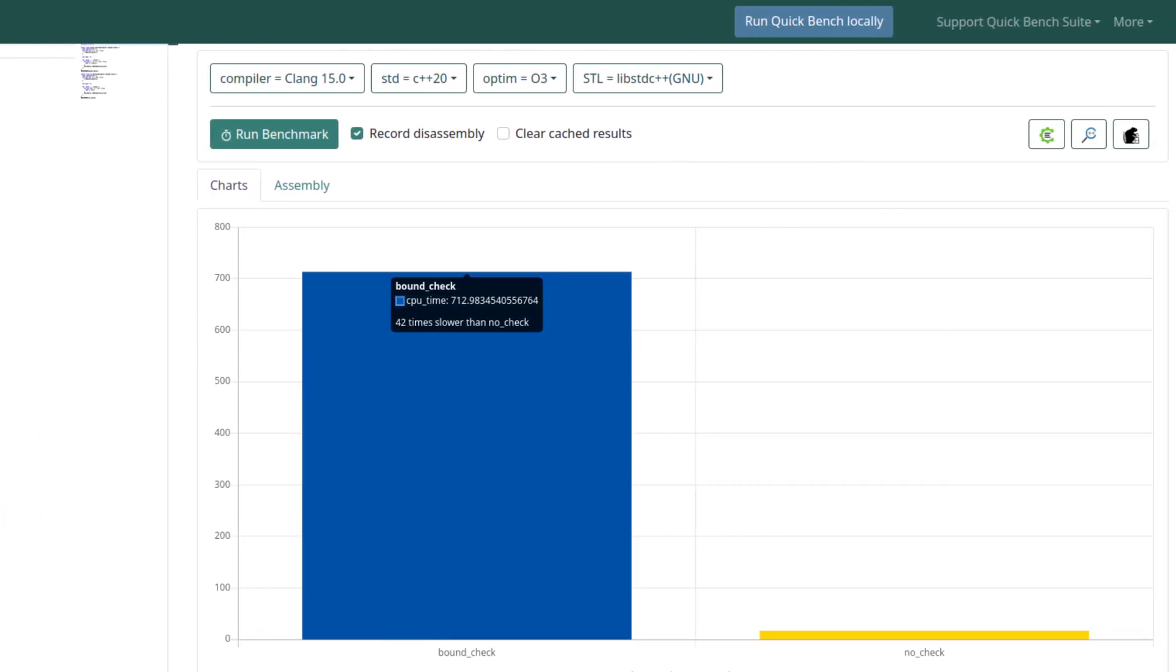It's 42 times faster. Turns out the bound checking blocks some compiler optimizations. In this case, loop unrolling and using SIMD instructions.